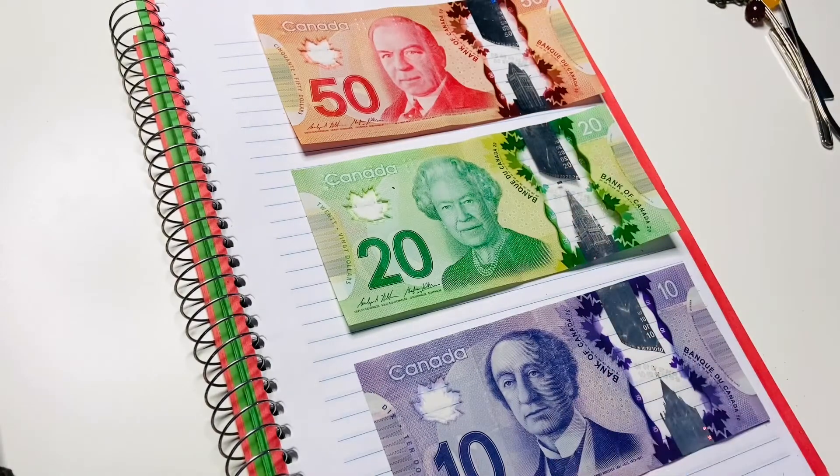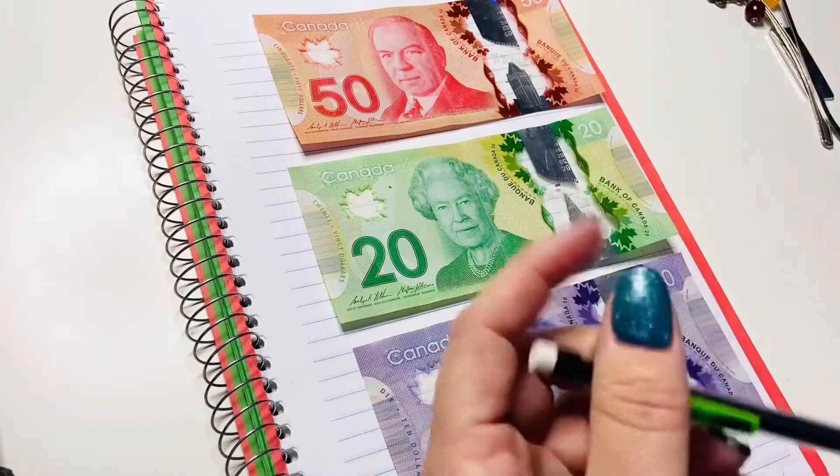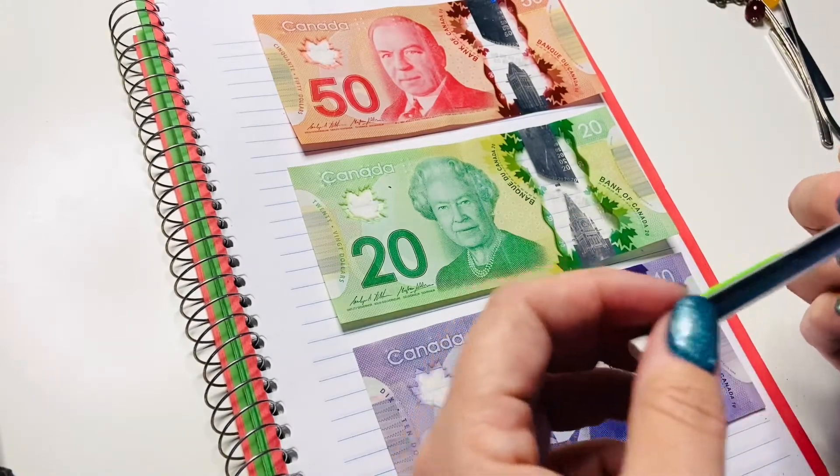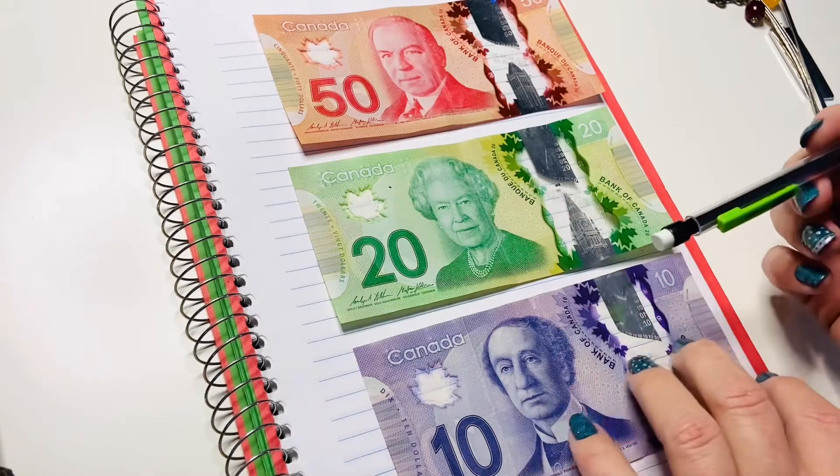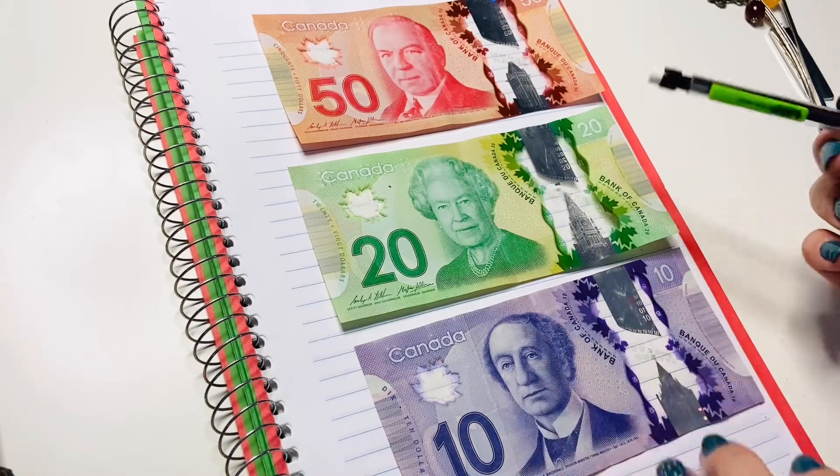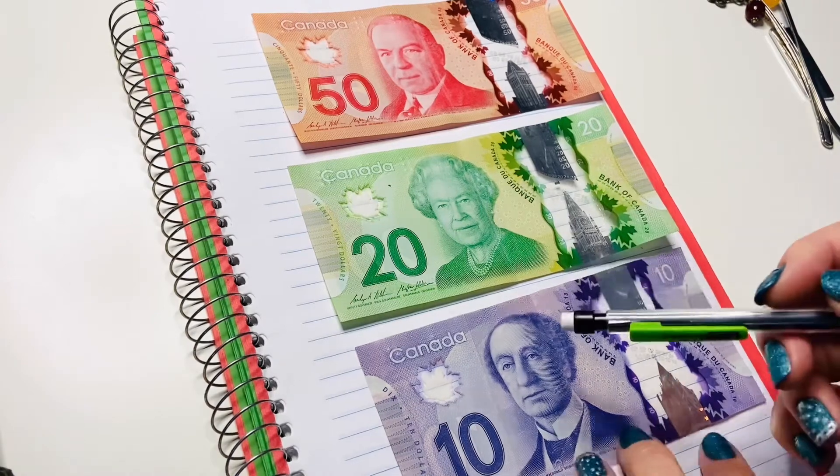In Canada we have ten dollar bills, twenty dollar bills, fifty dollar bills. We also have five dollar bills that are blue but I didn't have any on me, and hundred dollar bills that are brown. And then we have quite a few coins for two dollars, one dollar. I've done another video on my channel if you'd like to go take a look at that.